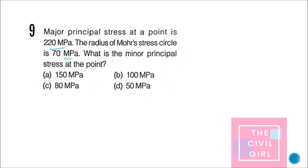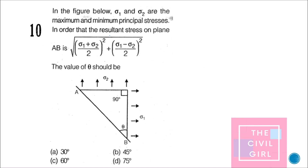Next question: the major principal stress at a point and the radius of the Mohr's circle are given. What is the minor principal stress? Using the relationship tau_max = (sigma 1 − sigma 2)/2, you can solve for sigma 2 given sigma 1 and tau_max. This is straightforward — please work it out and let me know the answer in the comments.